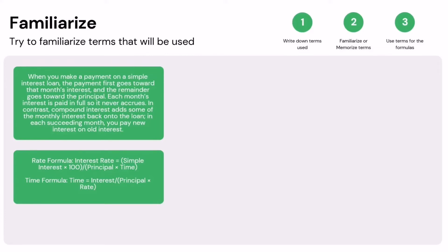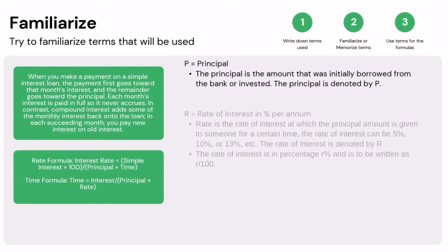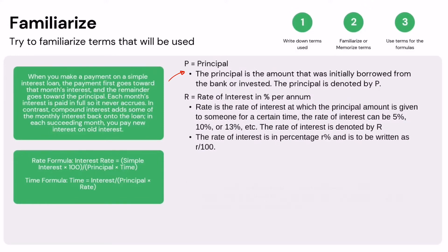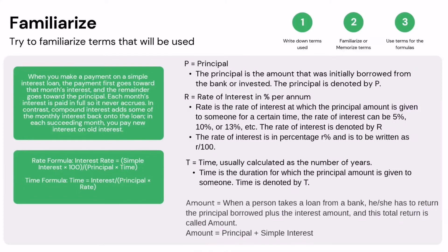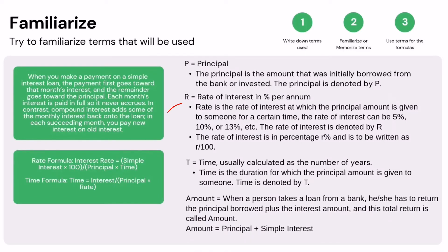Time formula: time equals interest divided by principal times rate. The formula for simple interest is SI equals P times R times T, where P is the principal — the amount initially borrowed from the bank or invested, denoted by P. R is the rate of interest in percent per annum, at which the principal amount is given to someone for a certain time. The rate of interest can be 5%, 10%, 13%, etc., denoted by R, and is written as R divided by 100. T is the time, usually calculated as the number of years — the duration for which the principal amount is given.